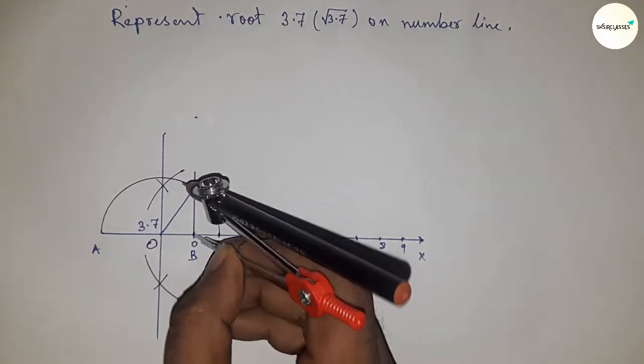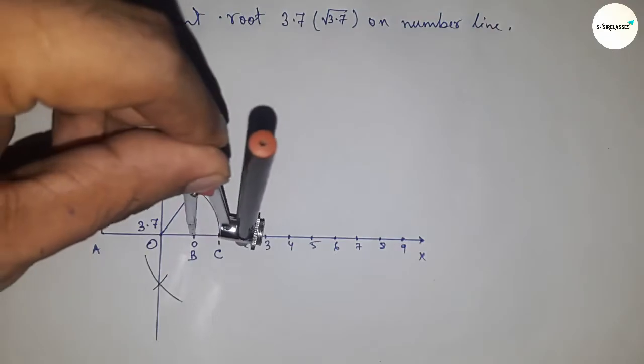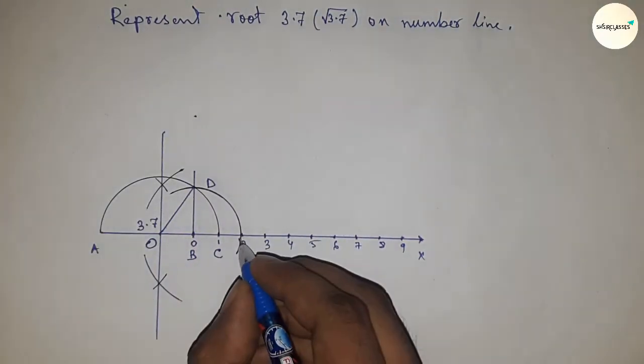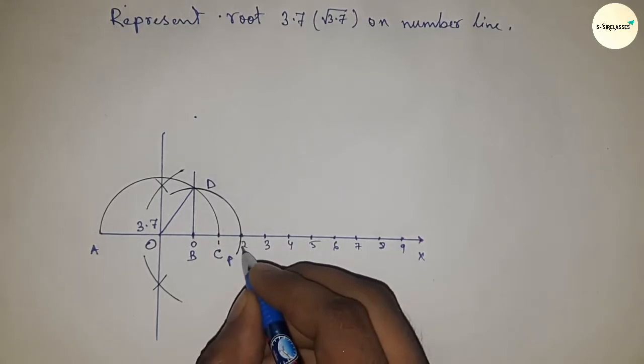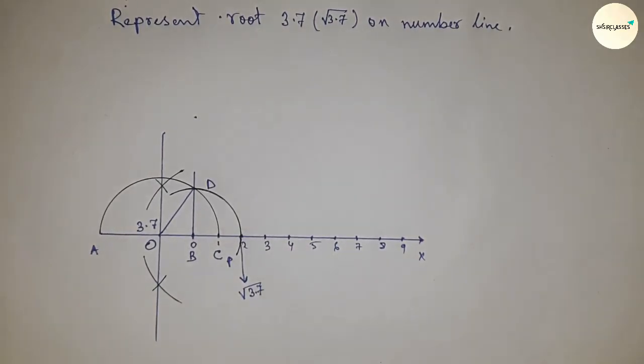Now taking the distance or length BD by compass and drawing an arc which meet the number line at a point P. And this is the representation of root 3.7 on number line.